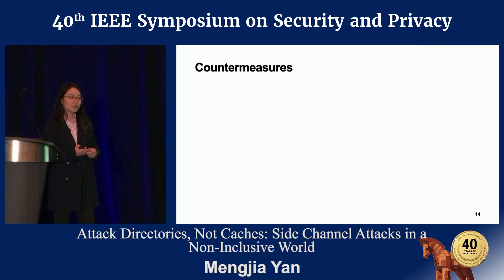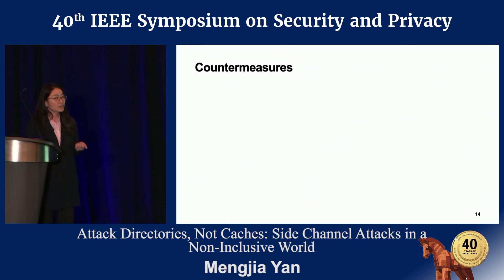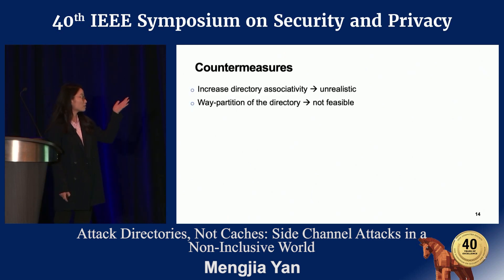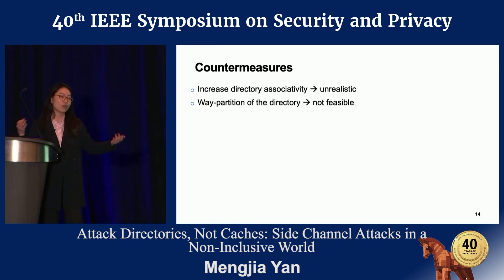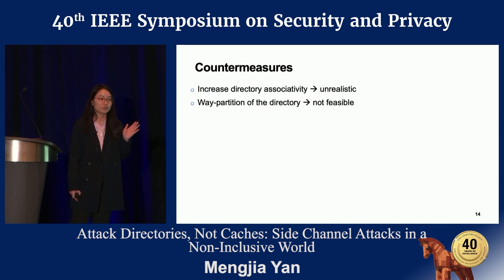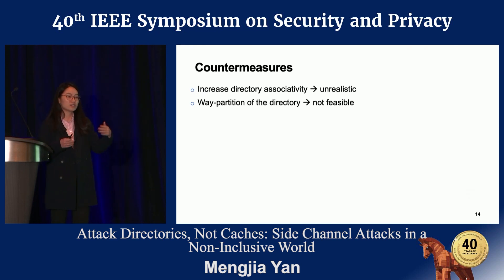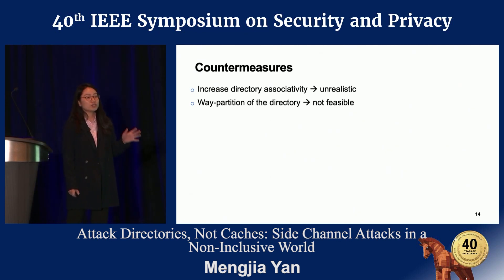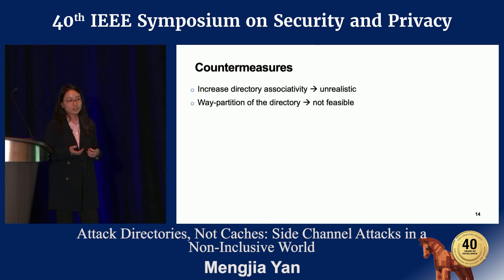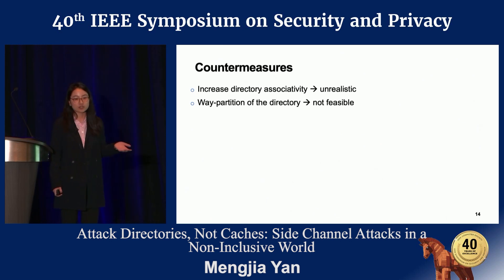A common question at this conference is about countermeasures. We thought about two simple solutions. One is to increase directory associativity — if you have enough associativity to hold all L2 lines, there will be no directory conflicts. But from a computer architect's perspective, building a set-associative array with more than 100 ways is unrealistic: too expensive and very low performance. Another possible solution is way-partitioning of the directory, similar to cache way-partitioning. But it's not feasible because the Extended Directory only has 12 ways, meaning you could support at most 12 security domains, while these server processors can have up to 28 cores and potentially 28 security domains.